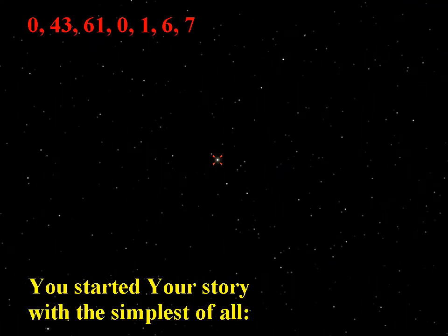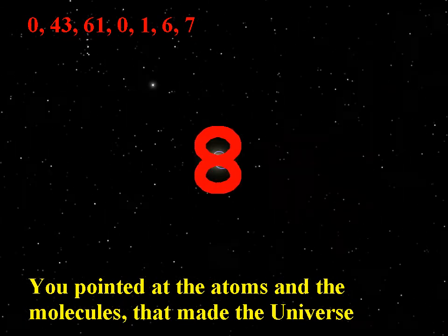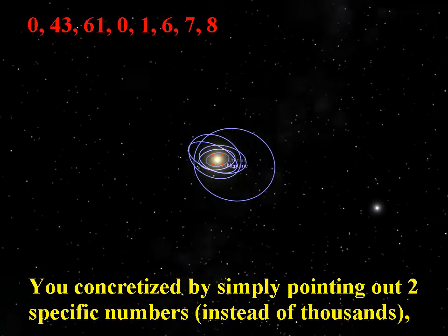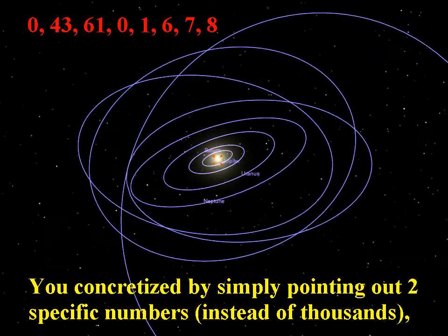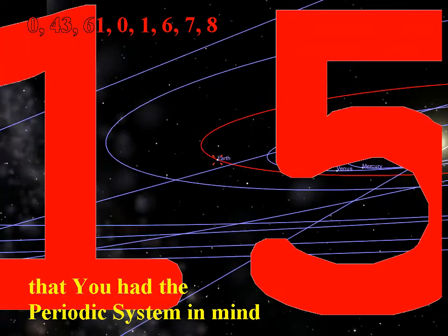You started your story with the simplest of all. You pointed at the atoms and the molecules that made the universe. You concretized by simply pointing out two specific numbers, instead of thousands, that you have a periodic system in mind.